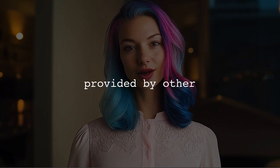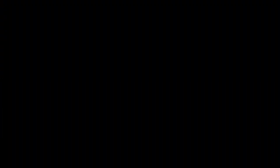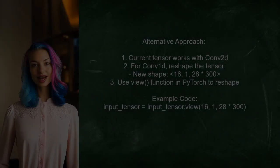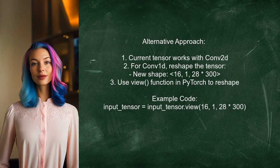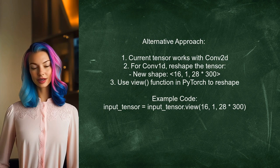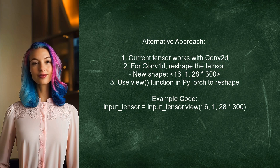Let's look at the answers provided by other users. One alternative approach suggests that while the current input tensor is suitable for Conv2D, you can use Conv1D by reshaping your data. Specifically, you can concatenate the embeddings into a tensor with the shape of 16, 1, and 28 times 300. This allows you to reshape the input using the view function in PyTorch.